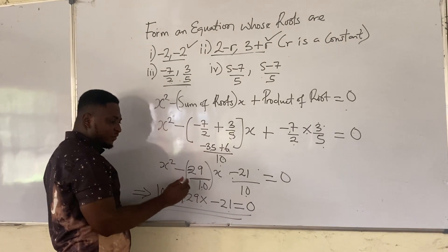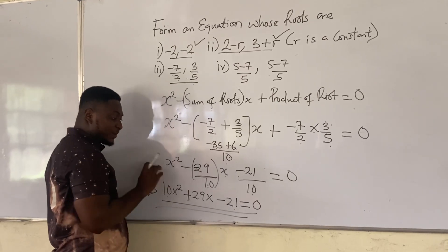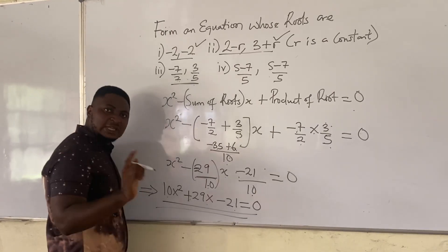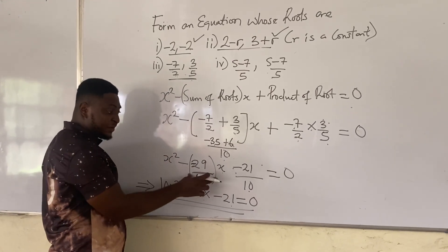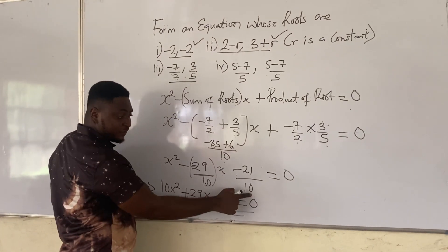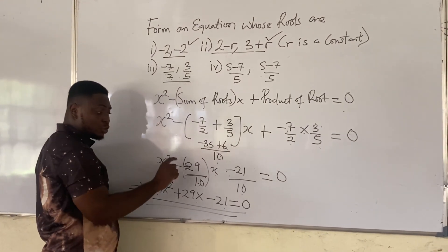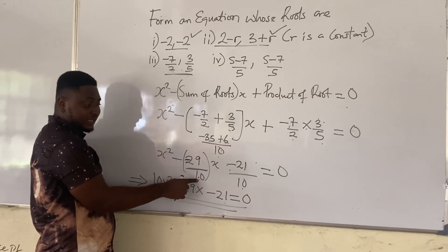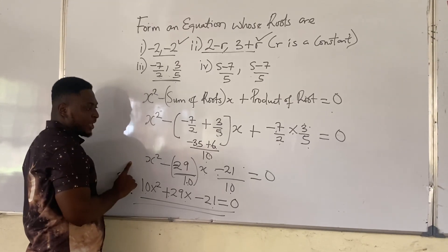Before, we had all over 10. What we did is that we multiplied all through by 10. And that's what we should learn how to do. Anytime you get your equation and you're having a fraction, go to the denominator and multiply all through by the denominator. In this case, our denominator is 10, so we multiply all through by 10.